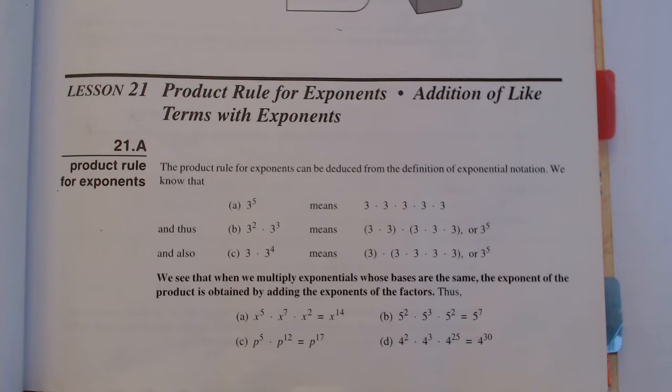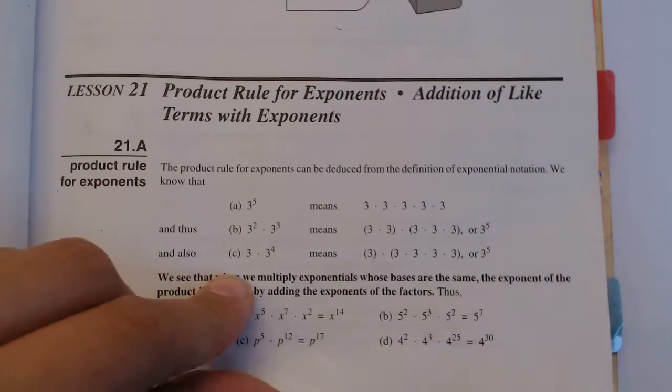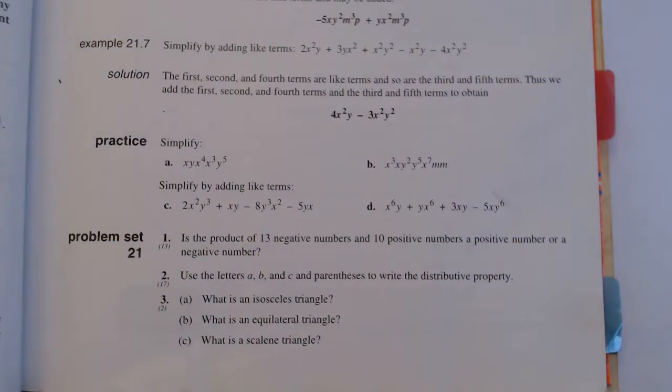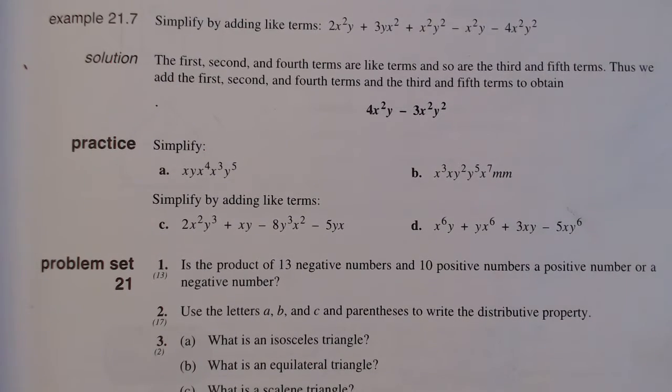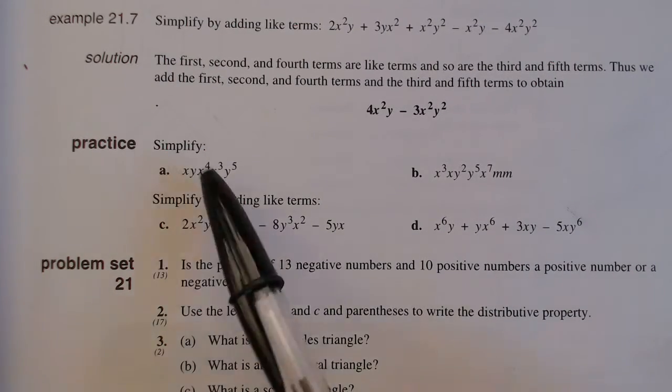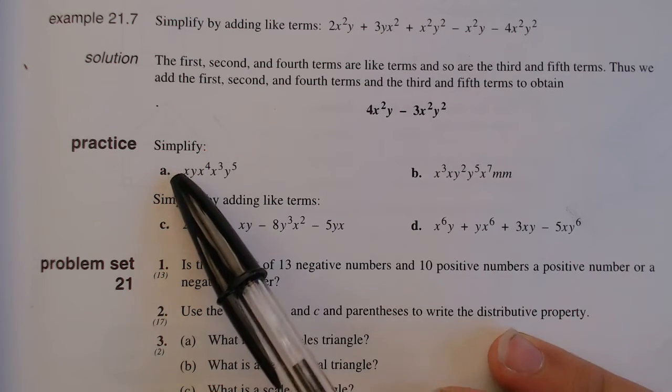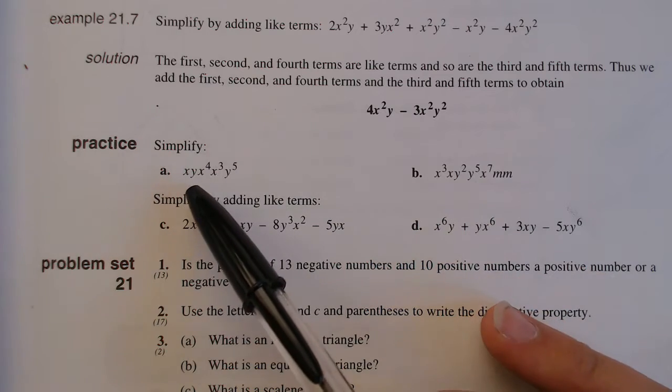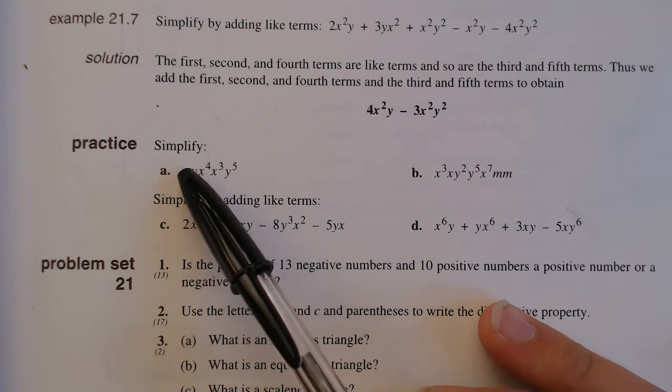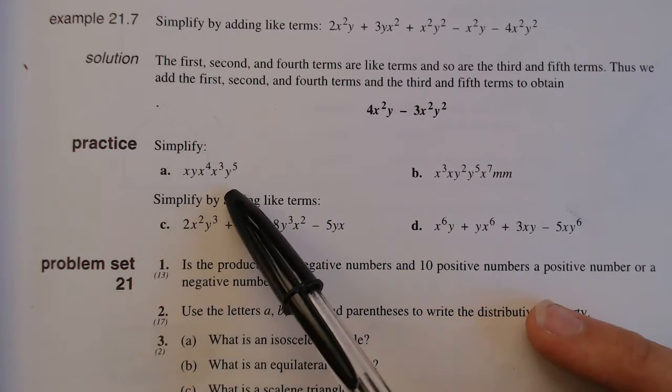Algebra 1 Lesson 21: Product Rule for Exponents and Addition of Like Terms with Exponents. We learned the product rule of exponents, which means that whenever we're multiplying unknowns with exponents, we can just add the exponents together, and that goes for whole numbers as well. Anytime we have two numbers that are the same number with different exponents, we can multiply them by just adding the exponents.